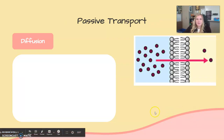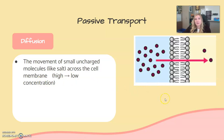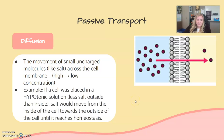The first example of passive transport is diffusion — the movement of small, uncharged molecules like salt across the cell membrane directly, from an area of high concentration to low concentration, to maintain homeostasis. For example, if a cell is placed in a hypotonic solution with less salt outside than inside, salt would move from inside the cell toward the outside until homeostasis is reached.